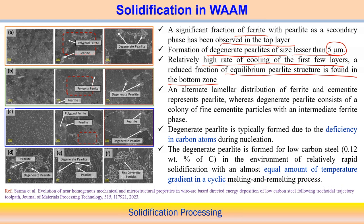For the microstructure, an alternate lamellar distribution of ferrite and cementite is observed — which corresponds to the pearlite structure. Degenerate pearlite is also observed, which consists of a colony of fine cementite particles with an intermediate ferrite phase. This is the typical characteristic of degenerate pearlite associated with the deposition of low carbon steel.